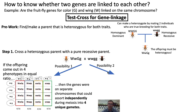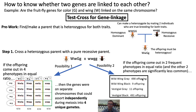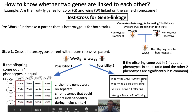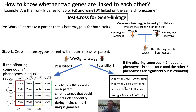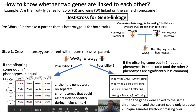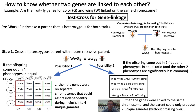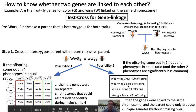The second possibility is that almost all of the offspring come out in just one of two phenotypes, and the other two phenotypes are significantly less frequent. If this is the result of the test cross, then we can conclude that the genes must have been linked to the same chromosome, and the parent was only able to produce two unique gametes without crossing over. The two rare phenotypes tell us that those offspring must have been the result of crossing over during meiosis.